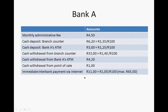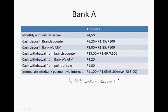If I deposit R500, I will pay R6.20. And then for every R100 — so R500 divided by 100 — I will multiply that by R1.35. So the R6.20 remains, and R500 divided by 100 is 5.